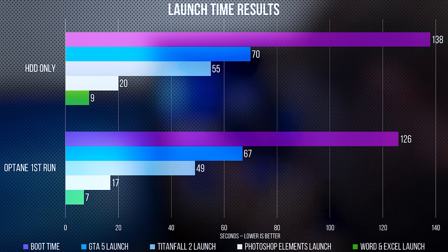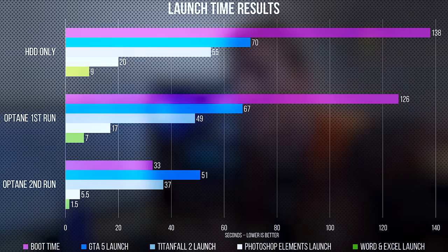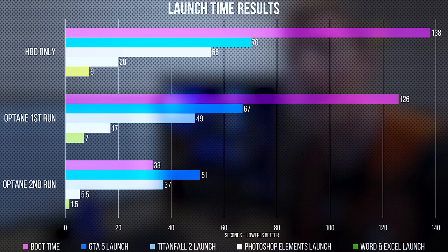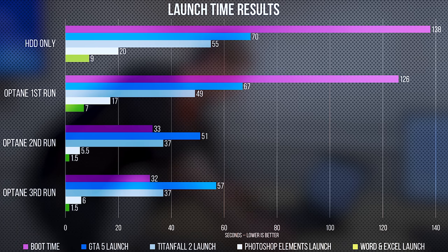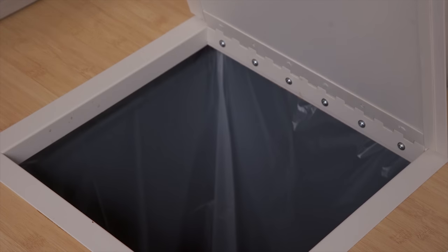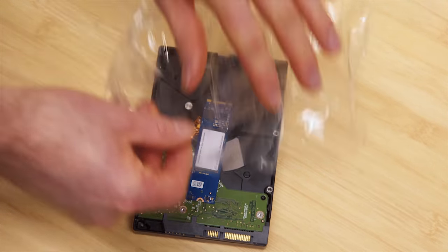And that's true for everything we ran after initially installing the Optane memory module. On the second run, now we're talking — Optane is starting to flex its muscles a little bit. Game loading times aren't affected as much, but boot times and application load times are noticeably snappier. For our third run, ignoring the margin of error inherent in relying on my fingers to press a stopwatch, overall the results look pretty darn similar to the third — and still very good.